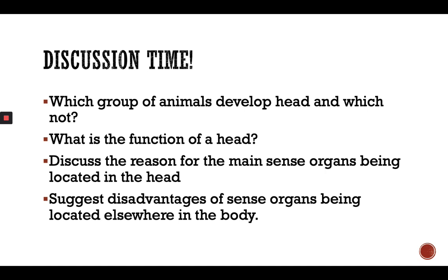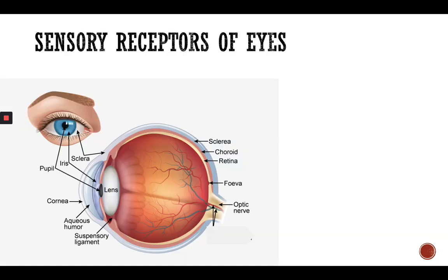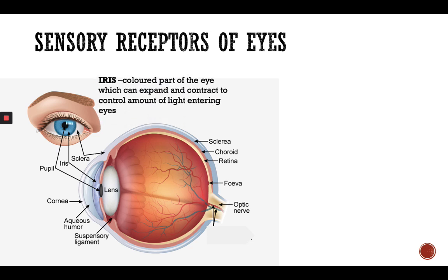Now let's look at the sensory receptors of the eyes. Today we're going to talk about the eyes and ears. Looking at the eye, the first structure is the iris. The iris is the colored part of the eye which can expand and contract to control the amount of light entering your eye.